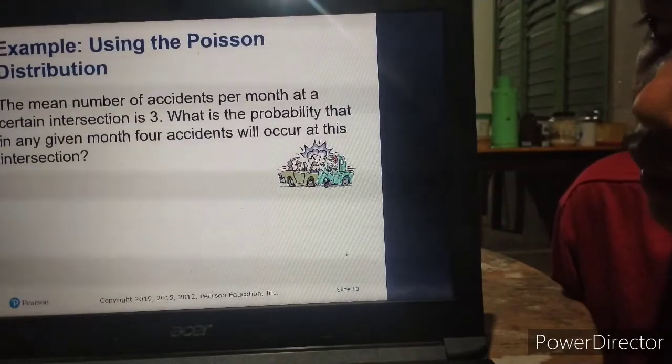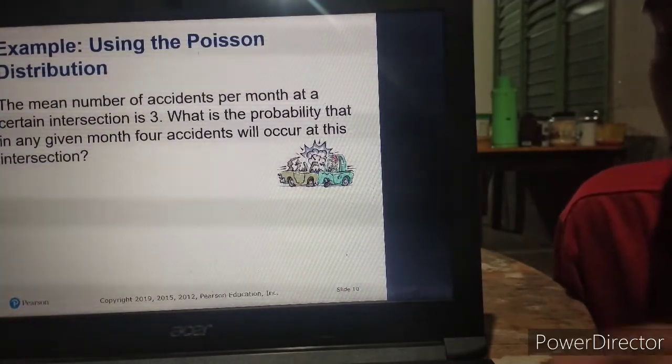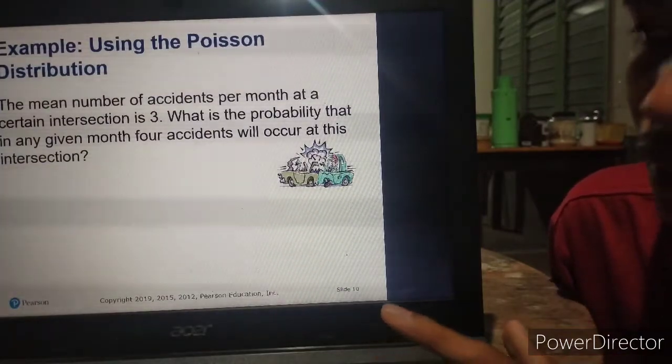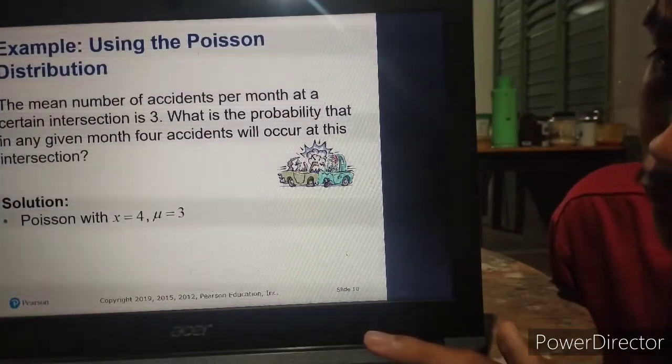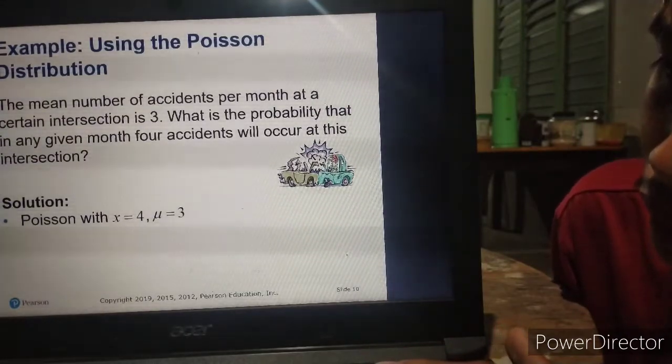The mean number of accidents per month at a certain intersection is 3. What is the probability that in any given month, 4 accidents will occur at this intersection? So let's identify the given. This is Poisson with X equals 4 and the mean is 3.